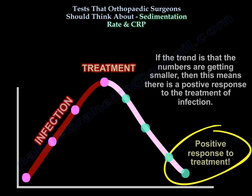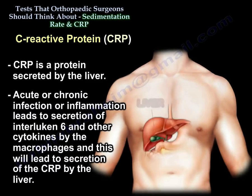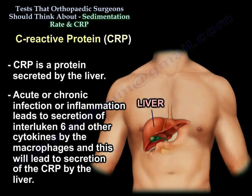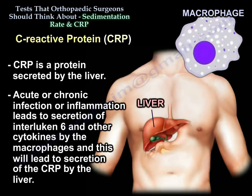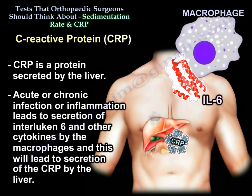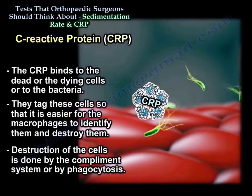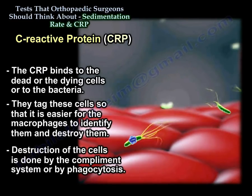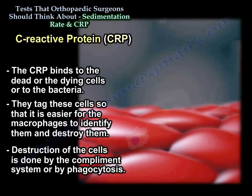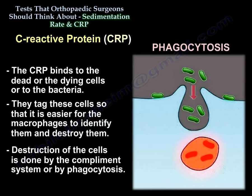CRP is a protein secreted by the liver. Acute or chronic infection or inflammation leads to secretion of interleukin-6 and other cytokines by the macrophages, which leads to secretion of CRP by the liver. The CRP binds to dead or dying cells or to bacteria, tagging these cells so it is easier for the macrophages to identify and destroy them. The destruction of the cells is done by the complement system or by phagocytosis.